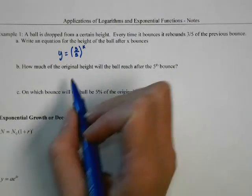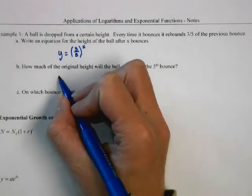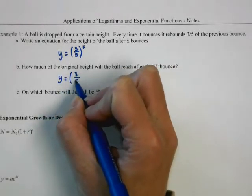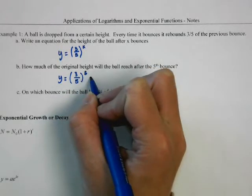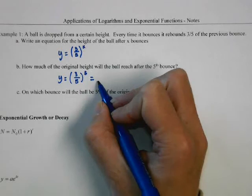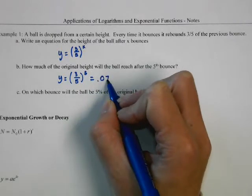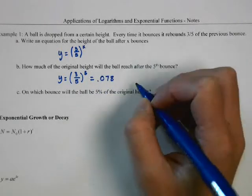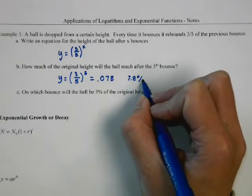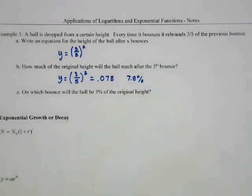For part b, how much of the original height will remain after the fifth bounce? We're just going to plug in five into the equation. Type that right into your calculator and you'll get an answer of 0.078, which is about 7.8%. So on the fifth bounce, it's only bouncing 7.8% of what it was on the first bounce.